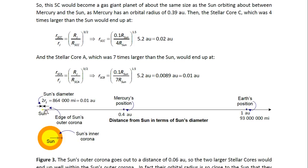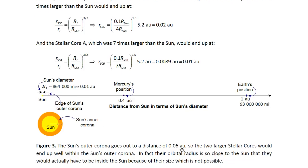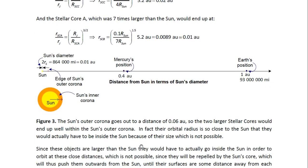Then the other ones would be inside. The edge of the Sun's outer corona is indicated here with this red line, and that's at 0.06 AU. So that means they would be inside there, inside the outer corona of the Sun. But they are so large that that would mean that the Sun would be inside the body of these objects. And since these objects are larger than the Sun, they would have to actually go inside the Sun in order to orbit at these close distances.